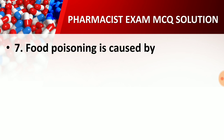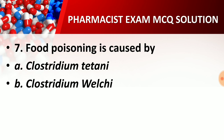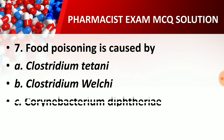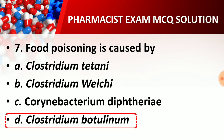Question number seven: Food poisoning is caused by — option A, Clostridium tetani; option B, Clostridium welchii; option C, Corynebacterium diphtheriae; option D, Clostridium botulinum. The right answer is option D, Clostridium botulinum, which is the microorganism that causes food poisoning in humans.